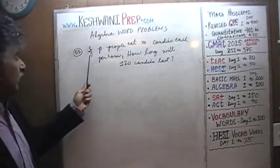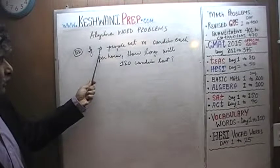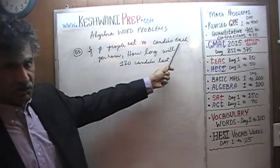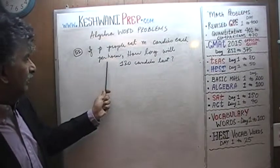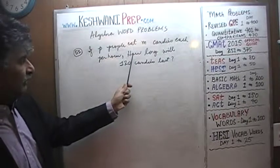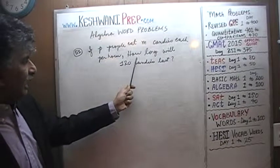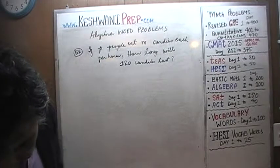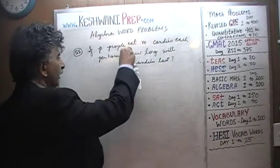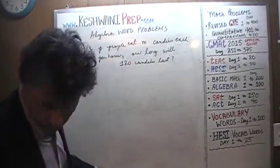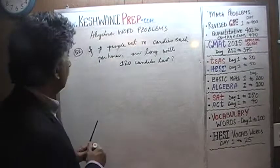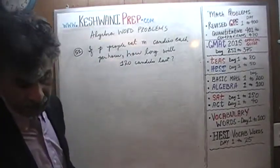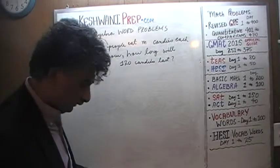We are told that P people eat M candies each per hour. The question is: if that's the case, how long will 120 candies last? Let's see what we can do.